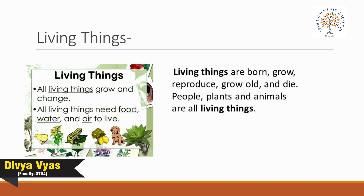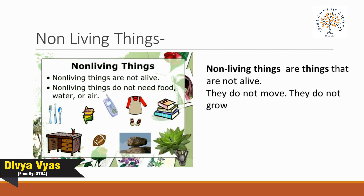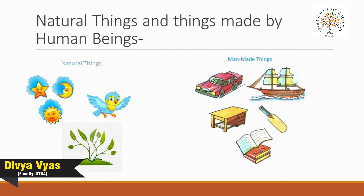Non-living things are things that are not alive. They do not move, they do not grow, they do not need food. For example, table, chair, books, toys, clothes, etc. When we look around us, inside or outside our house, we see hundreds of things — tables, chairs, books, toys, and clothes.